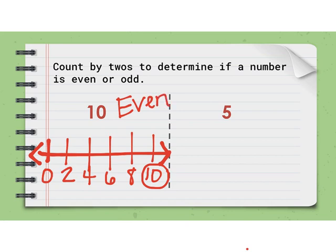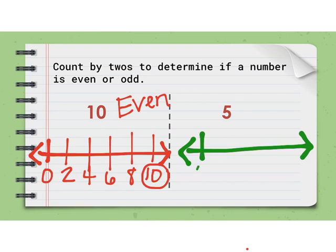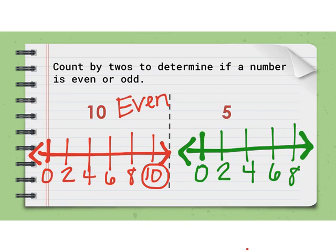Now let's look at five. If I draw a number line again and start with zero and count by twos: zero, two, four — what would come next? Six, eight. So where's five? Well, five would fall right here between four and six. Can I count by twos to get to five? No, I can't. So if you cannot count by twos to get to five, then it would be an odd number. Five is an odd number.